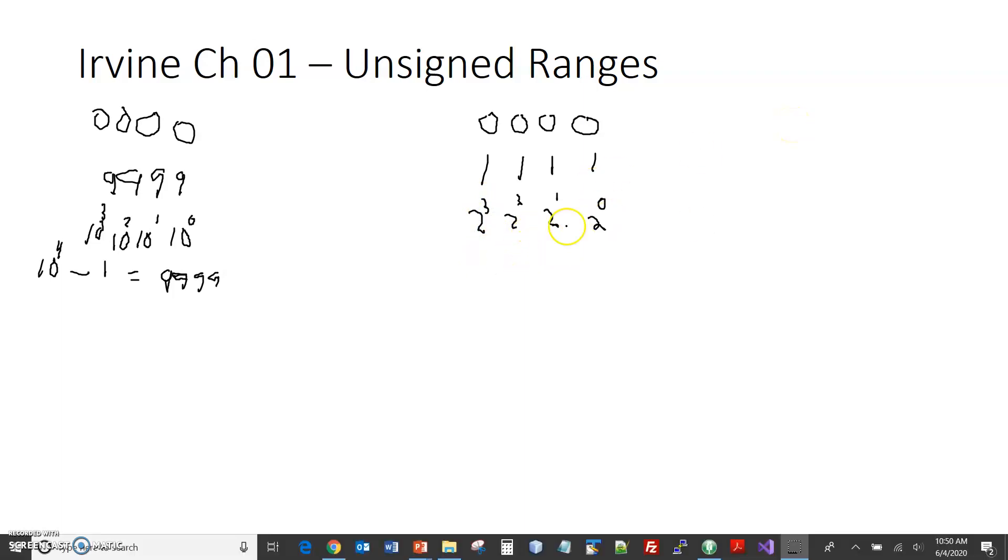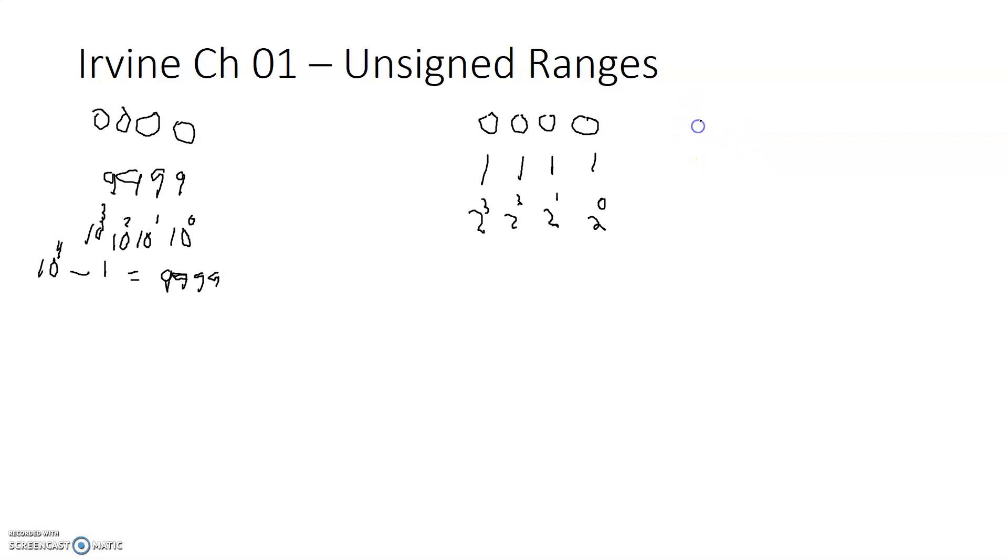So 8 plus 4, sorry, I had a little interruption again. Again, 8 plus 4 is 12, plus 2 is 14, plus 1 is 15. So when we're dealing with our unsigned numbers, the smallest value is 0, the largest value is 15.